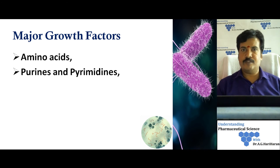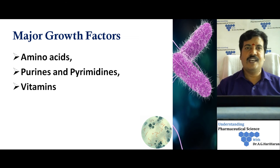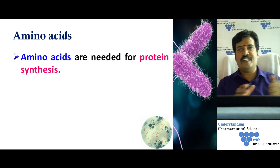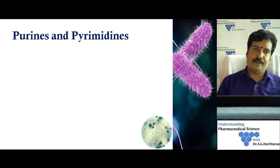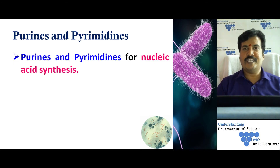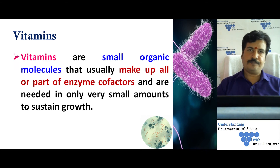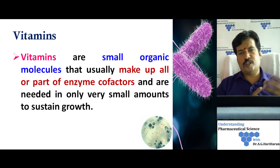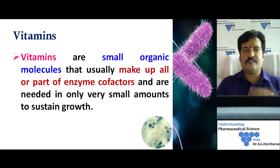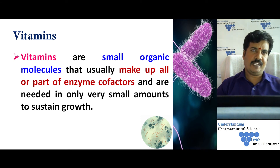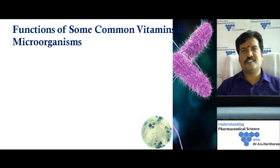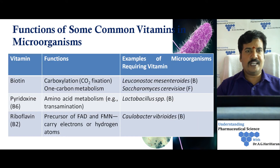Some microorganisms require purines and pyrimidines, which are the building blocks of nucleic acids, and some require vitamins. Amino acids are needed for protein synthesis; purines and pyrimidines are the basic building blocks of nucleotides, needed for DNA replication and nucleic acid biosynthesis. Vitamins are small organic molecules required in small quantities that act as co-factors along with enzymes for most chemical reactions, helping reactions proceed at a faster rate.